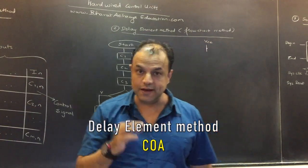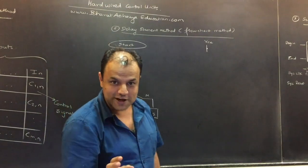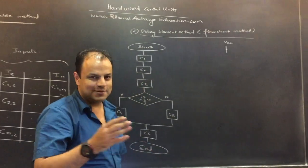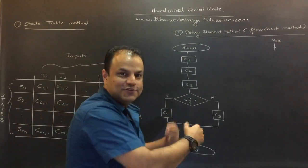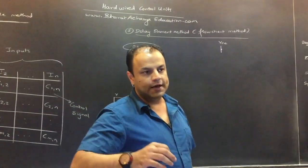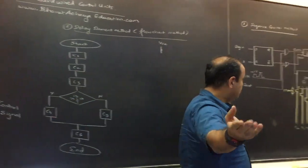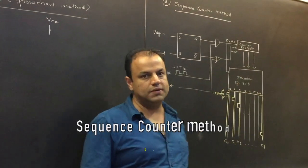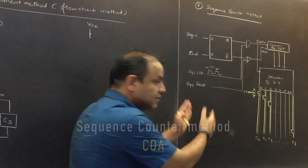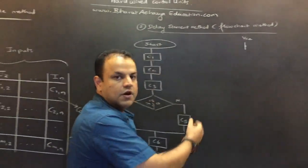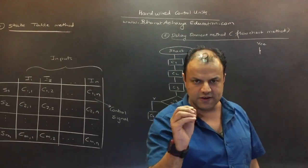The delay element method is very interesting to understand. It actually teaches you how a flow chart becomes a circuit. You've seen flow charts, you've written flow charts in school — how to make a circuit out of a flow chart is what this method teaches you. We'll be spending maximum time on this method. The final method is called the sequence counter method, which is the real-world implementation of a hardwired control unit, and it is completely derived from the delay element method.